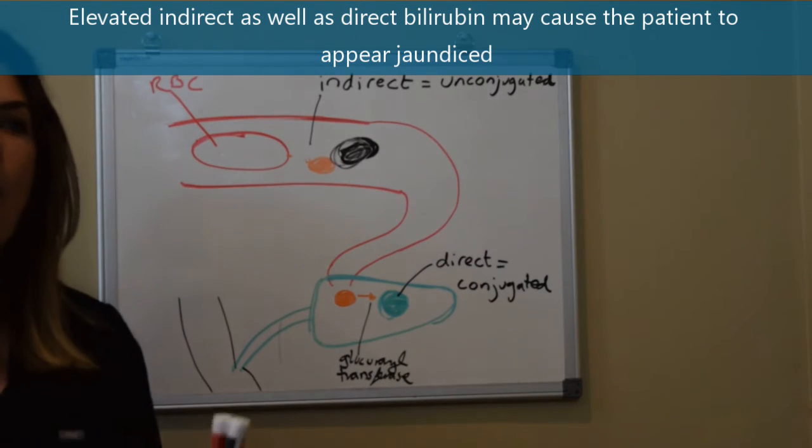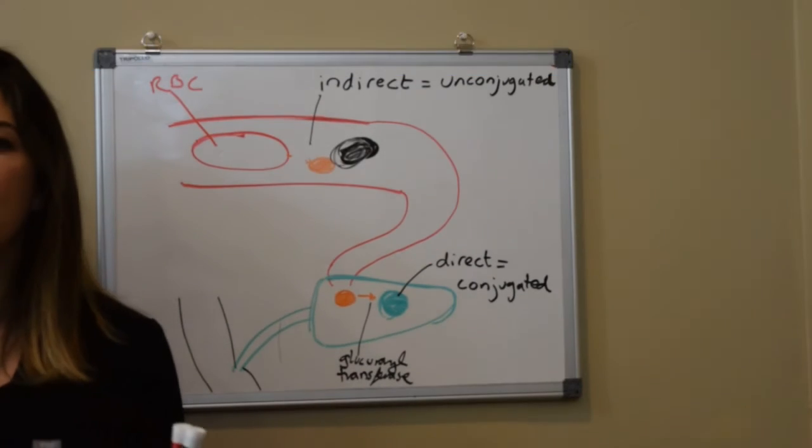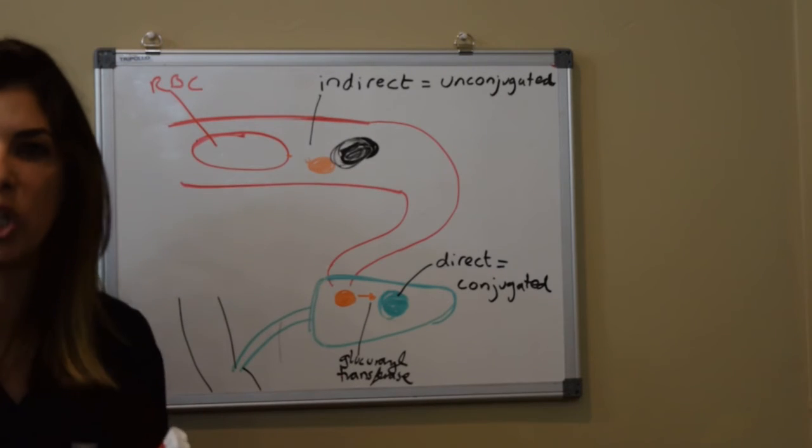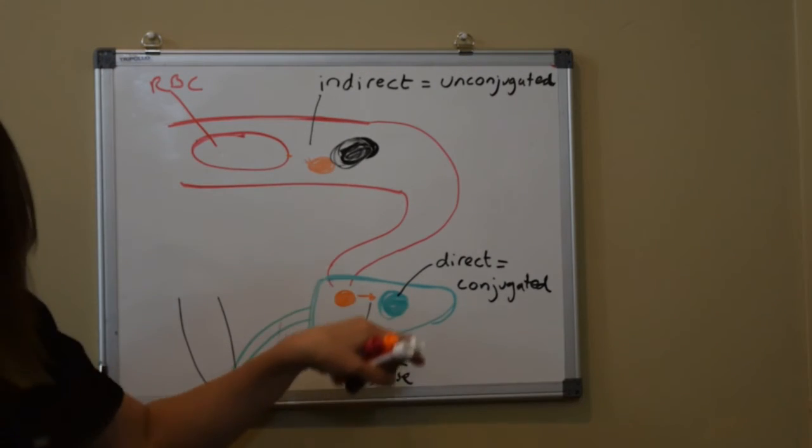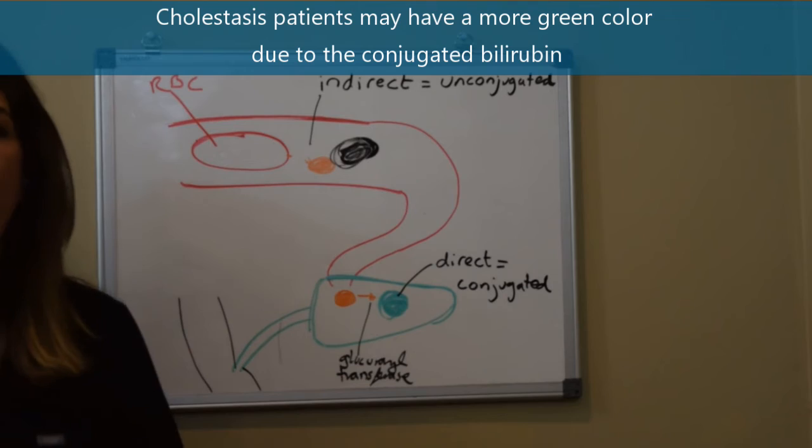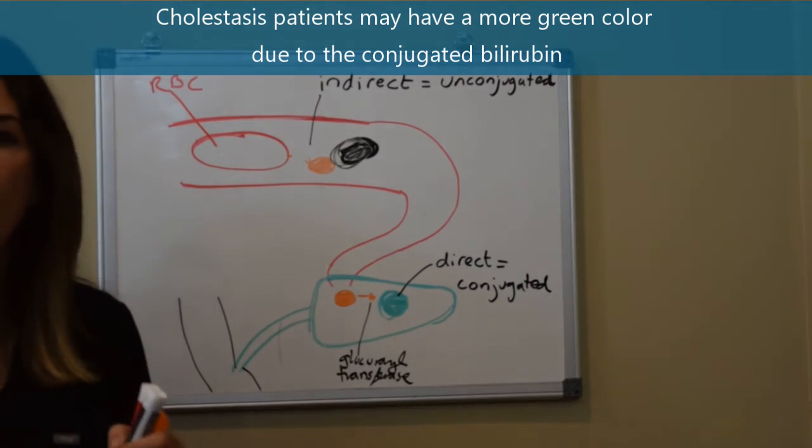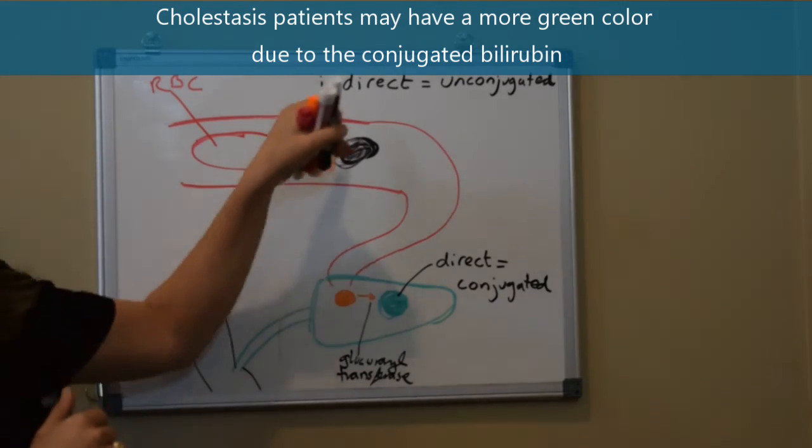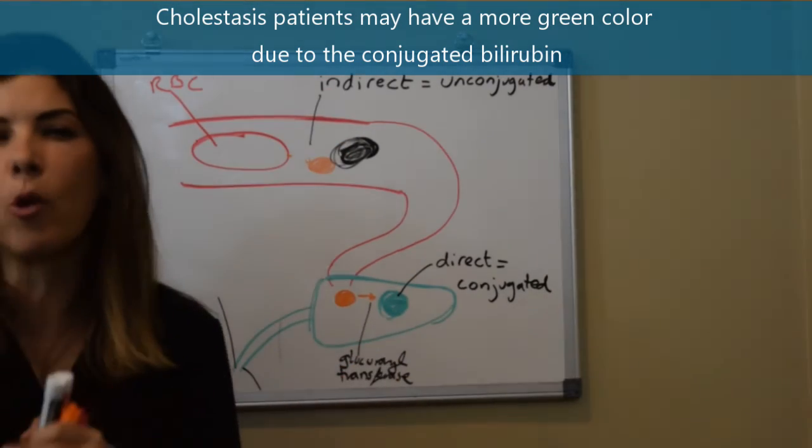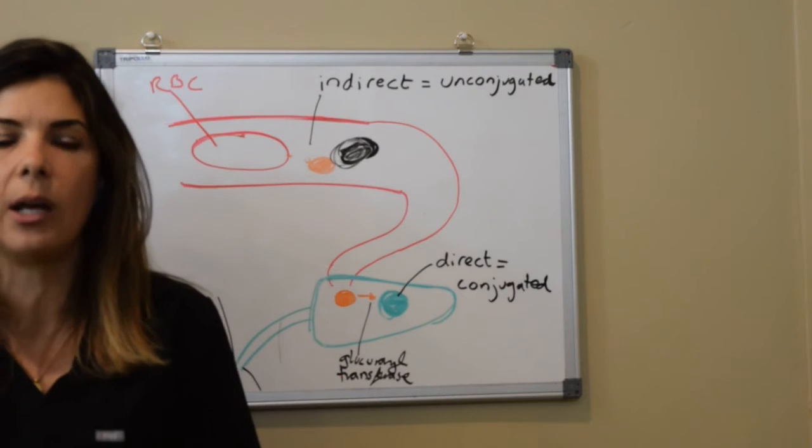Both an elevated indirect as well as a direct bilirubin will make the patient look jaundiced or yellow. Although I think everybody's really used to a slightly more greenish color because it's already conjugated bilirubin that happens in patients with cholestasis. So instead of that golden yellowish color that babies with indirect type of bilirubin get it's more of that greenish yellowish color in infants with cholestasis.